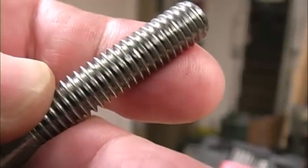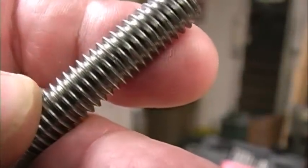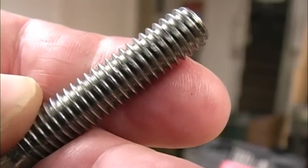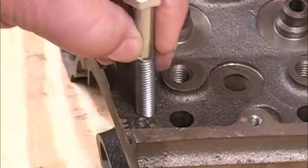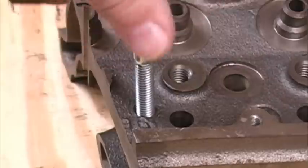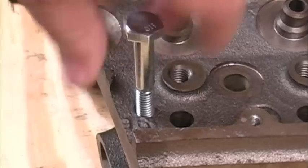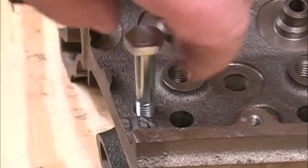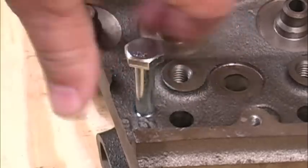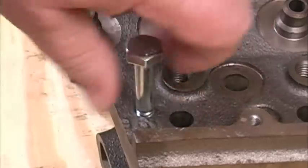After cleaning it up with the die, we can still see some very small flat spots on the ends of the threads. As small as those flat spots are, they're not going to cause us any problems, and you can see that the bolt threads right into the hole with just my fingers. If this bolt is going to get a lot of stress, I would still get a new bolt and install that as soon as I could, but this will work for now.